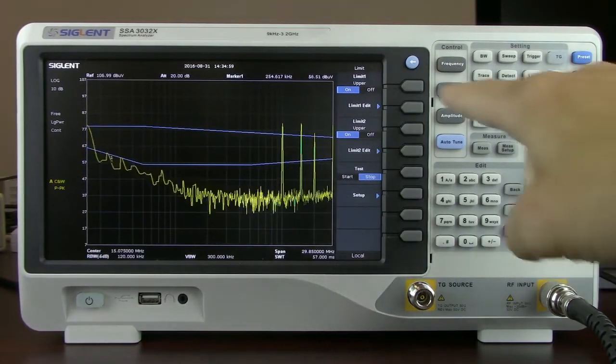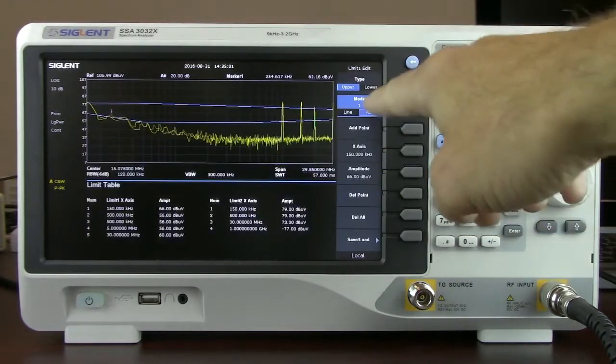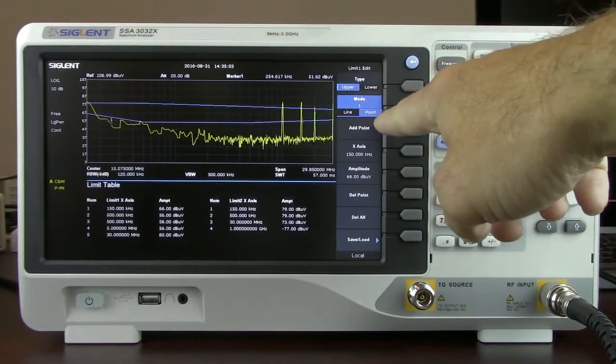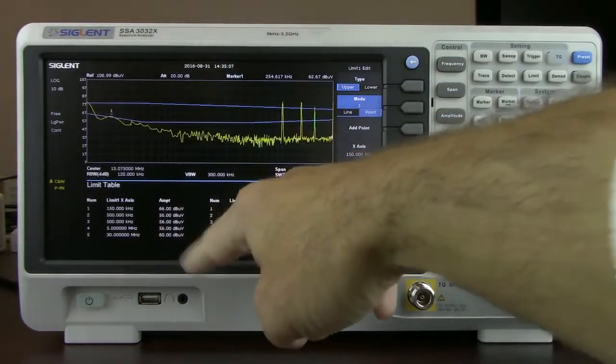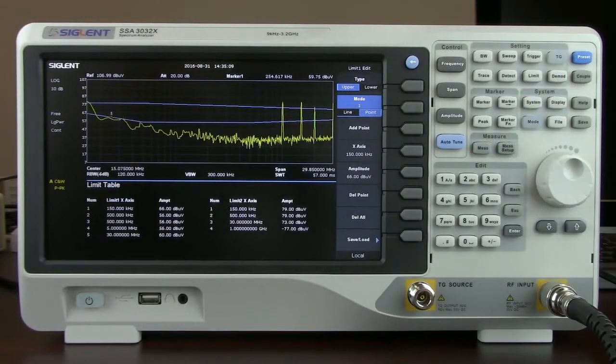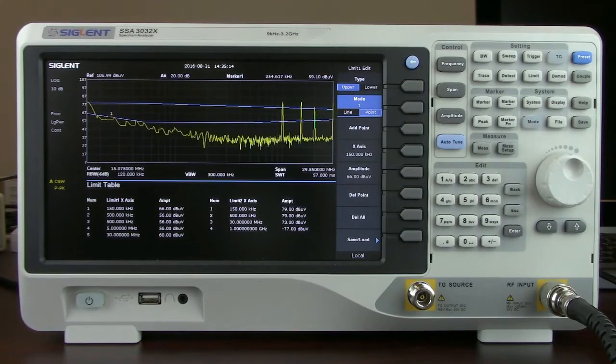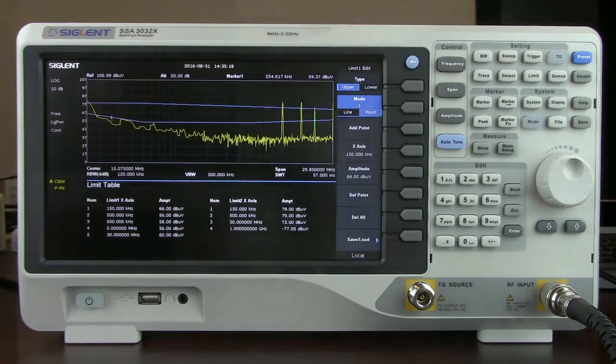Both of the limits can also be edited. They've got a line mode as well as a point mode. And in the point mode, you can see that we've got the X axis as well as the amplitude values for each of the points in that particular test. All of these features are very helpful when you're performing pre-compliance. And there's also a software application that can help to sequence a lot of the data collection.